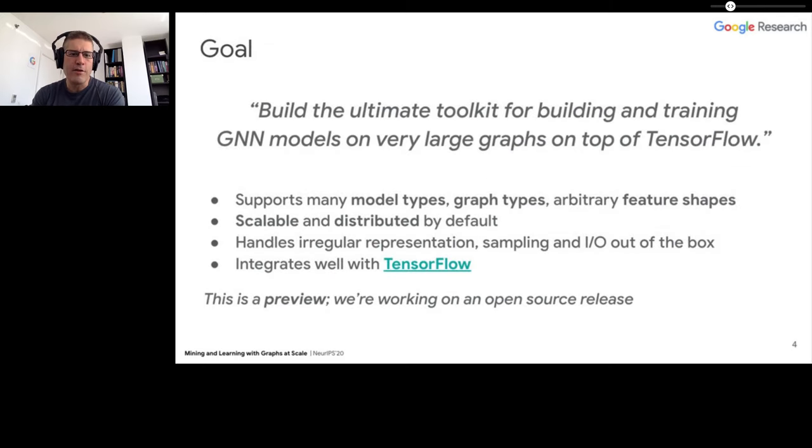Our goal is to build the ultimate toolkit for building and training graph neural networks on very large graphs on top of TensorFlow. We want to support any type of model, any kind of classification, unsupervised model, any types of graphs with any arbitrary graph topology and any shape of features. This is done by default in a distributed setting in a scalable way. Our graphs have billions of nodes and tens of billions of edges. We handle all the details of irregular representation, how to produce and prepare input data, and how to represent them in TensorFlow. This is a preview - we'd like to open source this soon.